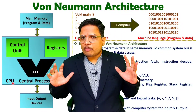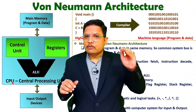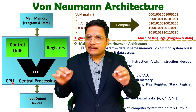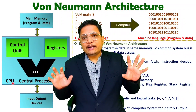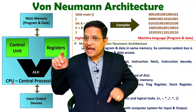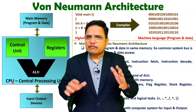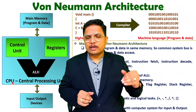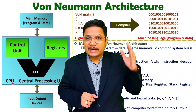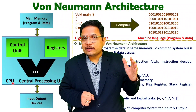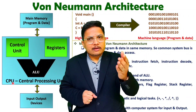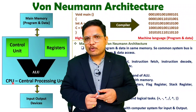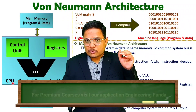When we talk about Von Neumann architecture, program and data are stored inside a common memory. When program and data are stored in separate memory, that architecture is Harvard architecture. Von Neumann architecture is cheap in terms of cost, and you can observe it in early versions of Intel microprocessors like the 8085 and 8086 — those had Von Neumann architecture only, with no separate memory for program and data.